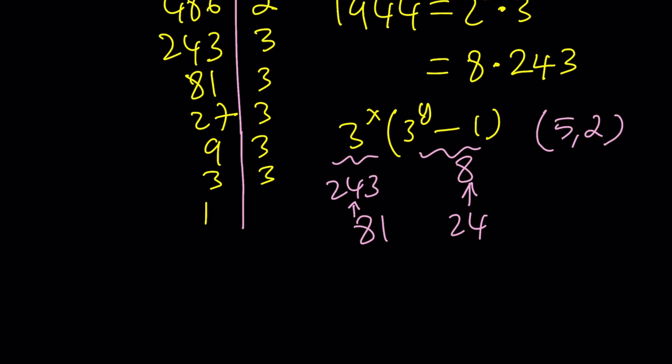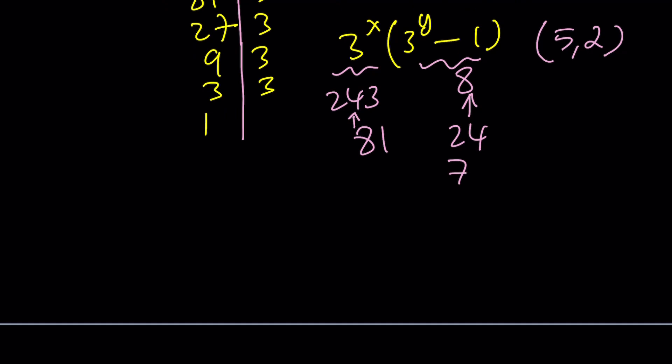Keep multiplying 8 by 3 and check if any of these numbers will be in the next one. It's going to be 72, and now we're going to have 216, and then 648, and finally 1944. But unfortunately, none of these will be equal to 3 to the y minus 1. Therefore, 5 comma 2 is going to be the only solution to this equation.